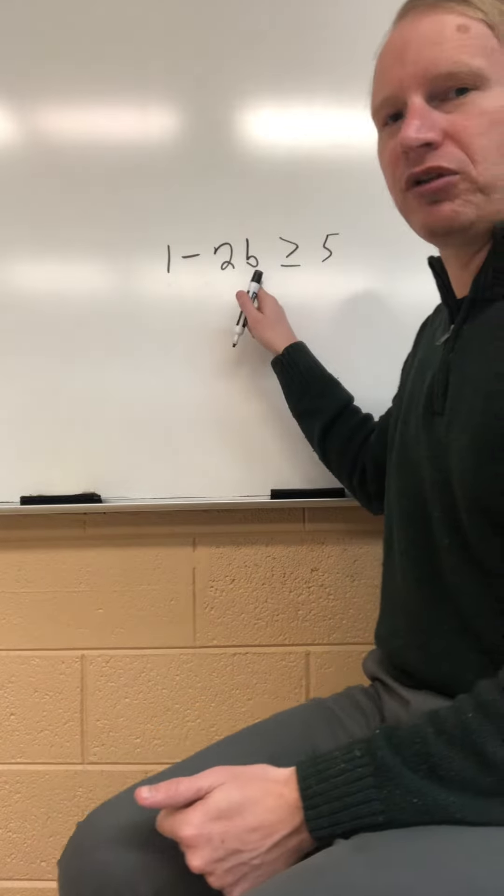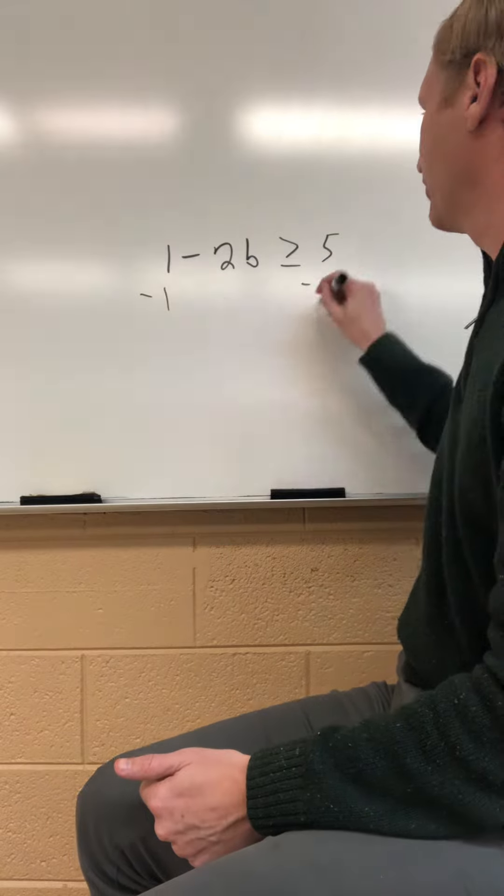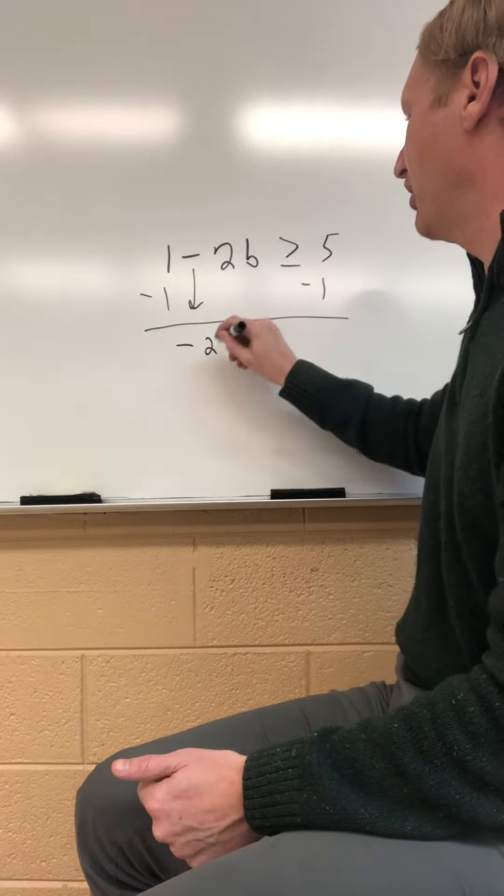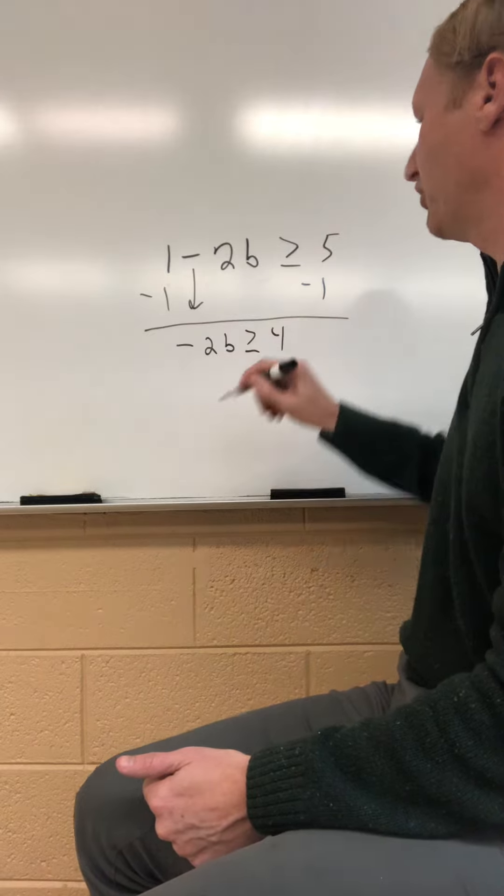1 minus 2b is greater than or equal to 5. Let's start by subtracting 1 from both sides. That gives me negative. Don't forget to bring down that negative sign. Negative 2b is greater than or equal to 5 minus 1 is 4.